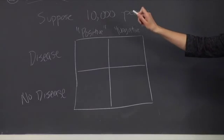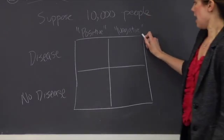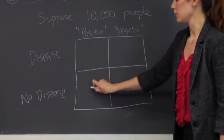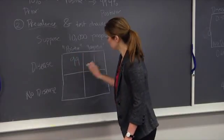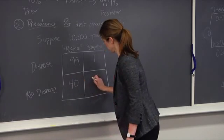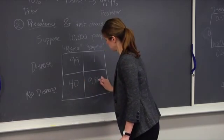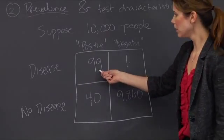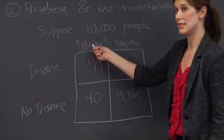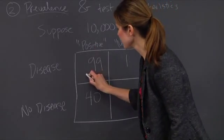Using the probability tree that we just calculated, I can show the number of people that will fall into each one of these buckets. Approximately 99 people will have the disease and have a positive test result. This is referred to as the number of true positives in the population.